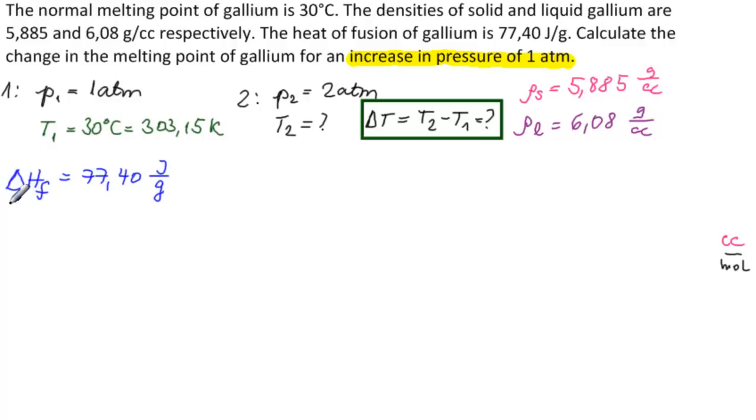This is molar enthalpy, molar heat of fusion. So we're going to need to multiply this number times the molar weight of gallium. And that would give us grams per mole, and the grams will cancel. We'll have joules per mole, which is the correct units for delta HF.